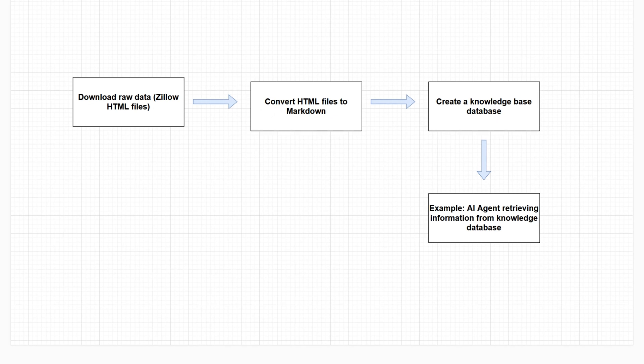Here's a diagram to illustrate the flow. We will first save HTML files that contain property listings from Zillow's website, then convert the HTML files into Markdown files. We will then create a knowledge database and load the Markdown files as a knowledge source. And in the last step, I will show you how to retrieve information from a knowledge database with your agent.